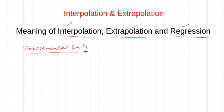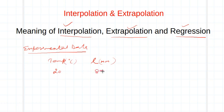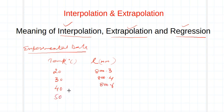Consider a rod that is heated at different temperatures. The length of the rod is recorded in millimeters. At 20°C the length is 800.3 mm, at 30°C it is 800.4 mm, at 40°C it is 800.6 mm, at 50°C it is 800.7 mm, at 60°C it is 800.9 mm, and at 70°C it is 801.0 mm. This is the experiment performed in the laboratory.